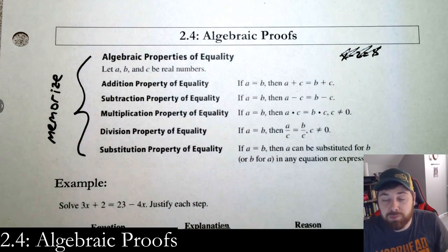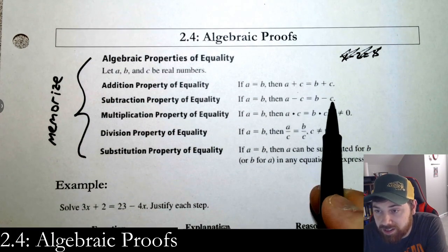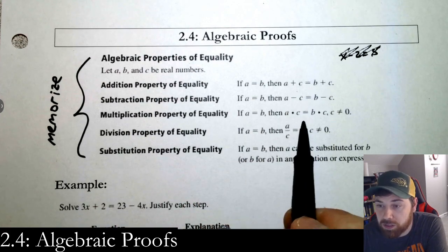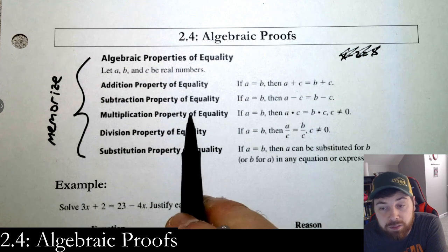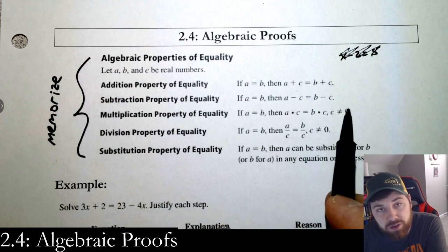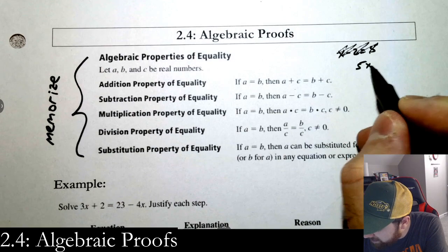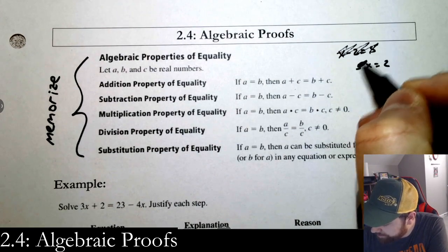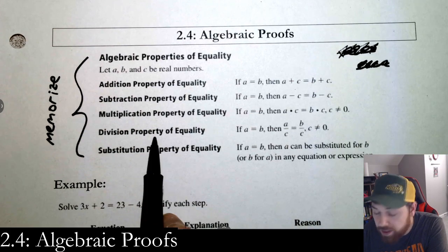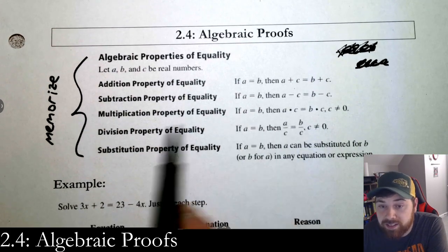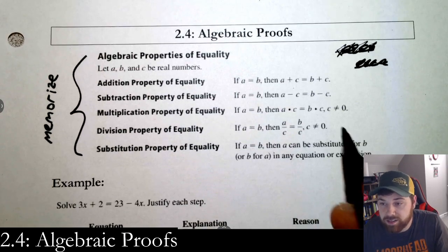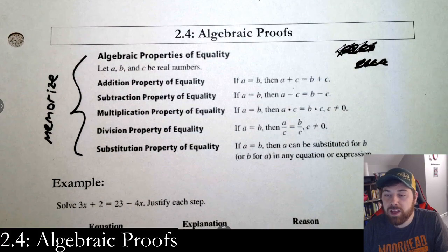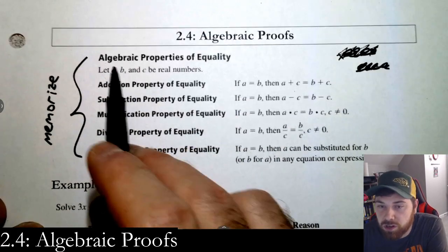If I'm subtracting from each side, that's the subtraction property of equality. If I want to multiply the same thing on both sides, that's the multiplication property of equality — but c can't be zero. You can't just take both sides times zero — that's not allowed. If I want to divide the same thing on both sides, that's the division property. Again, c can't be zero because you can't divide by zero.